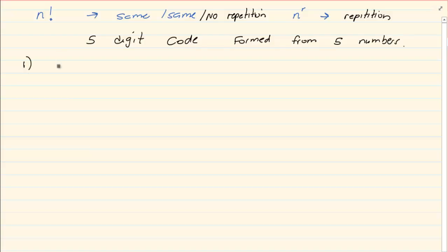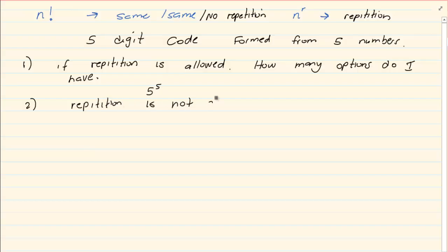The first one is if repetition is allowed. How many options do I have? If repetition is allowed. Then what do we have? We have five to the power of five. But if we say repetition is not allowed. Then we have five factorial. Can you see the difference?